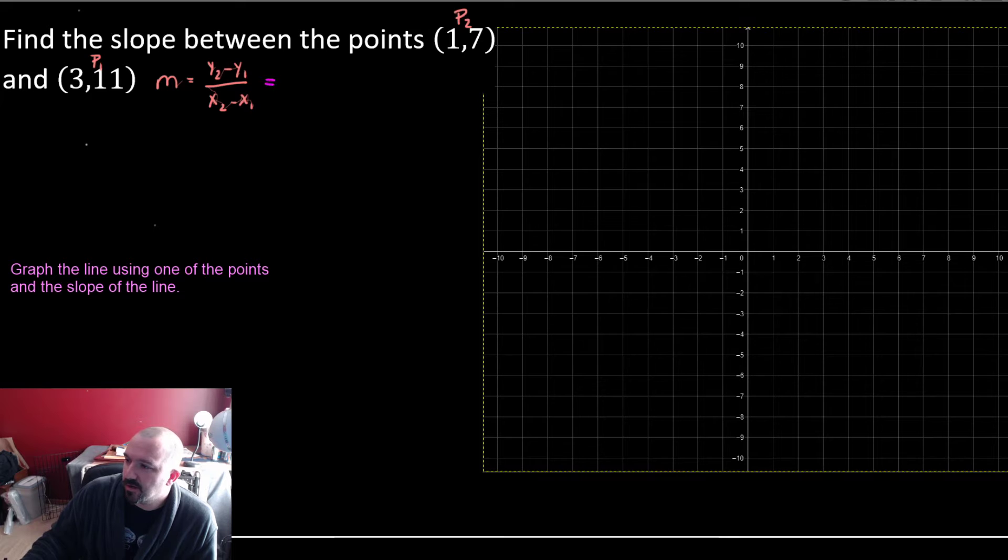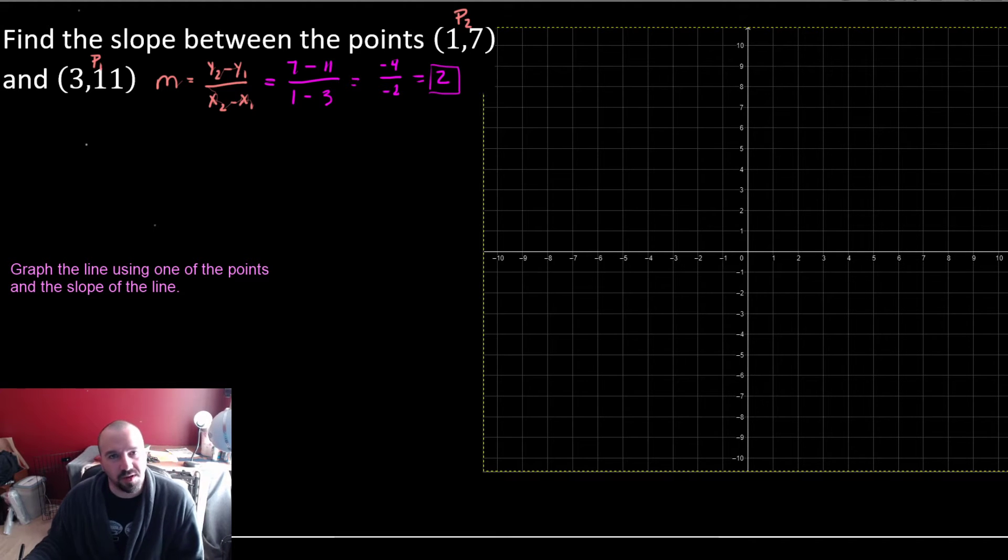So here, we have y2, which is 7, minus y1, which is 11, divided by x2, which was 1, minus y2, which is 3. This is going to give us negative 4 over negative 2, which gives us a value of 2. So our slope has a value of 2.